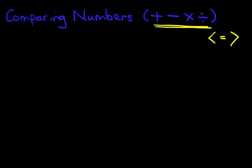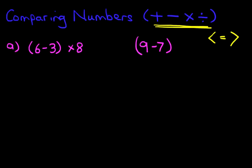Let's begin with our first example. Those are our two sets of numbers. On the left hand side we have 6-3 in brackets times 8. On the right hand side we have 9-7 in brackets times 11. The first thing we have to do is work out the answers for each side. Let's do the one on the left first — do the brackets first.